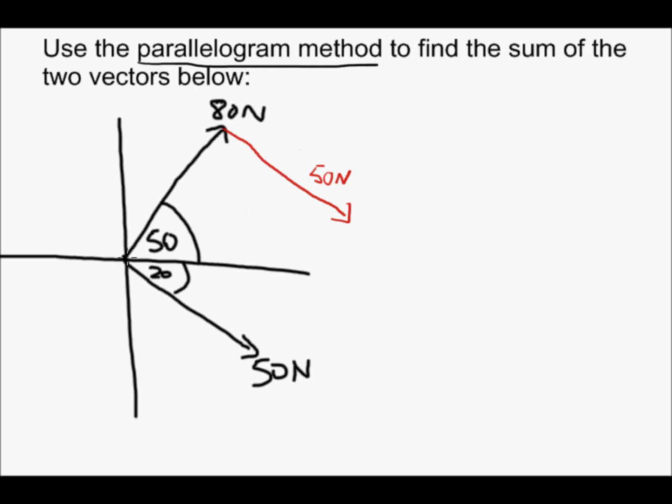Then the resultant starts at the origin and goes to the end of the path shown by these two vectors. So this is about what the resultant will be and that's what we're trying to find. We need to find the length of this line and also the angle that it's on, so I'm going to call this angle theta.